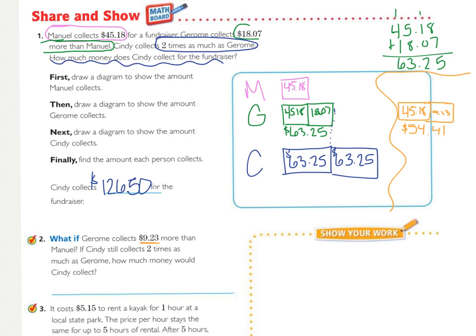For number two, there's my diagram for Jerome's new amount, and Cindy's would still be two times that. So, $108.82.